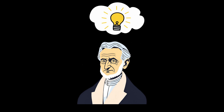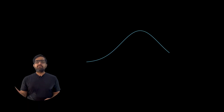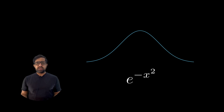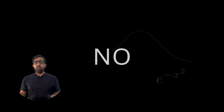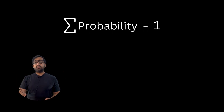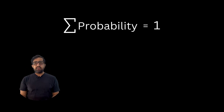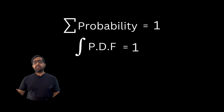But Mr. Gauss had the brain of a researcher. He must have thought that just the shape of the curve does not validate that this is the PDF equation of the standard normal distribution. He must have verified it with the first property of any probability density function: the sum of all probabilities must equal 1, or for a continuous variable, the integral of the PDF must equal 1.